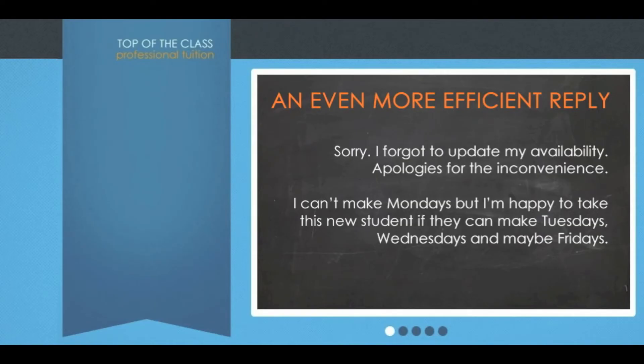This is certainly more efficient than the initial response, but at this point I still need to get back to Sam again to fill in some of the blanks. So trying to anticipate what it would be like in this situation, what are those blanks that need to be filled? An even less ambiguous response could have said: 'Sorry, I forgot to update my availability. Apologies for the inconvenience. I can't make Mondays, but I'm happy to take on this new student if they can make Tuesdays, Wednesdays, or maybe Fridays.' Now remember, statistically, by this stage there's a 50-50 chance they might be pretty frustrated that we told them Sam was available Monday at 4, and now it turns out he's not. But assuming they are still happy to go ahead, if I've given this information, they still need to get back to me to clarify further — so are you able to anticipate what are the blanks still to be filled in?